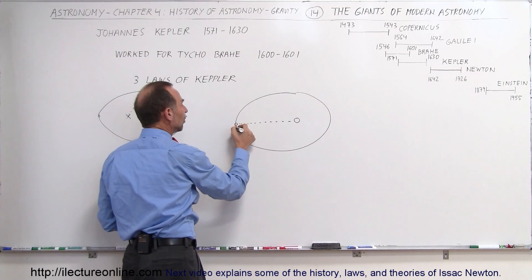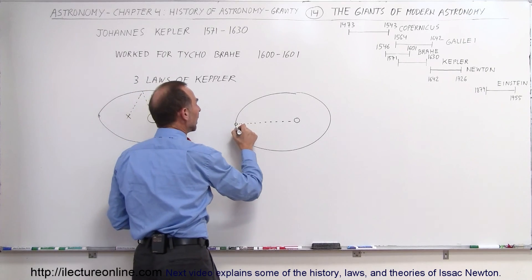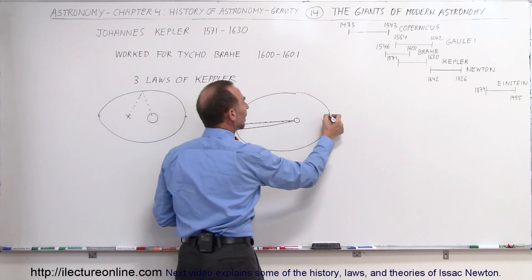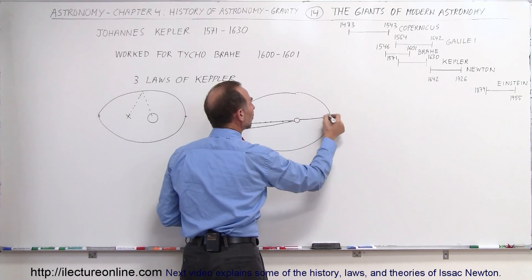You could tell that over a certain time elapsed, the planet would move a smaller distance when it's far away. And so let's connect those two lines like this. And then when the planet was close, in the same amount of time,